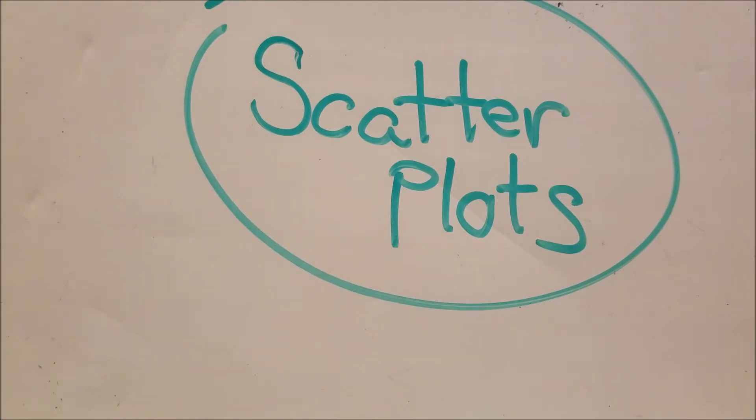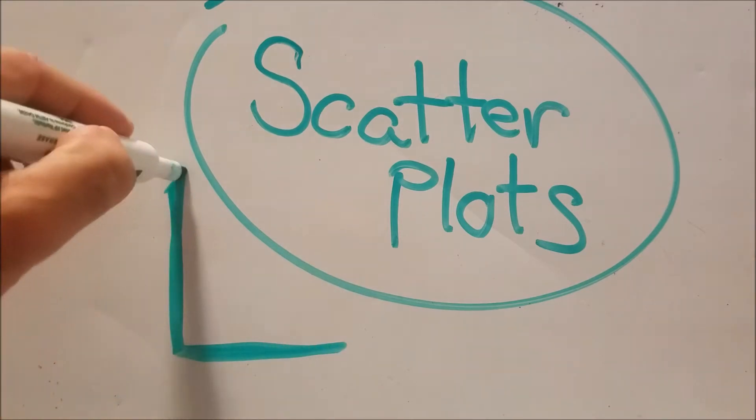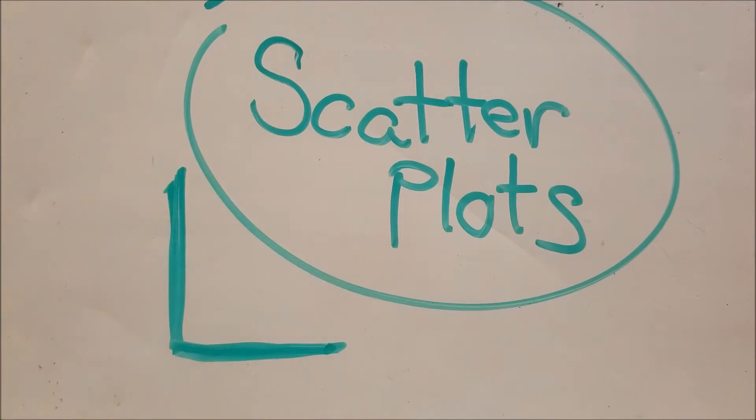For example, we can have the x and y, right? We'll just put one over here. And scatter plots are in quadrant one of the coordinate plane, Cartesian grid. We have data in x and y.